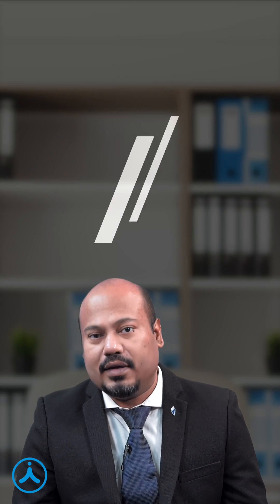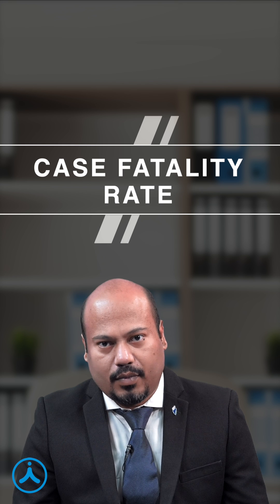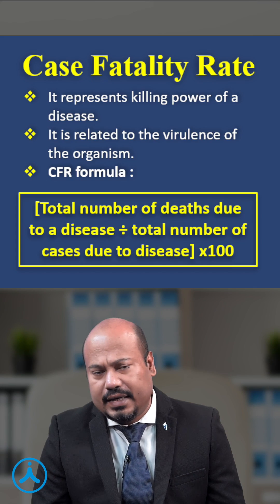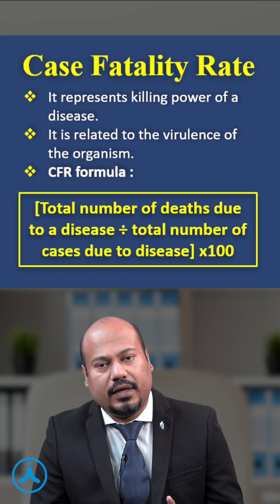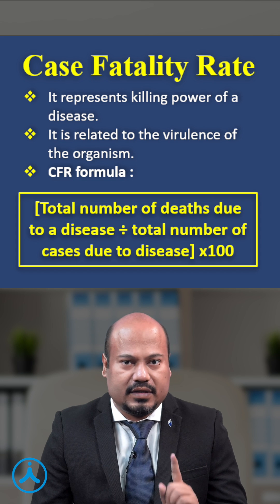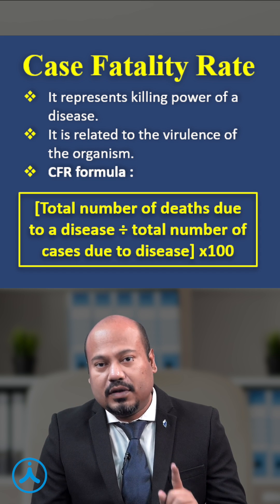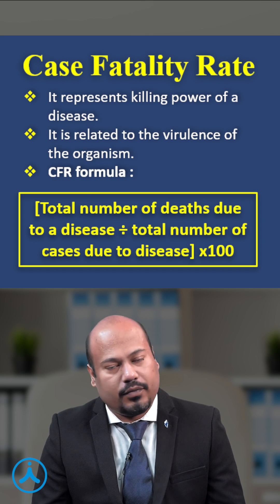Hello students. From the chapter of the concept of health and disease, another vital topic: case fatality rate. So what is the case fatality rate? It is the killing part of the disease, and the killing part of the disease will be directly proportional to the virulence of the organism.